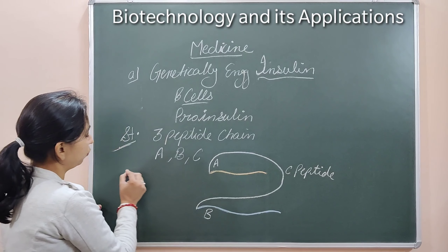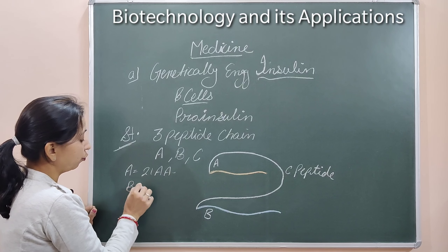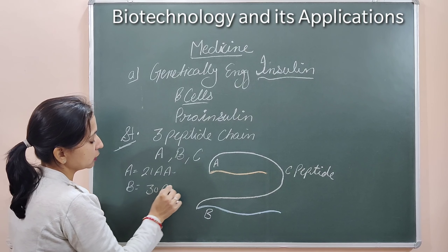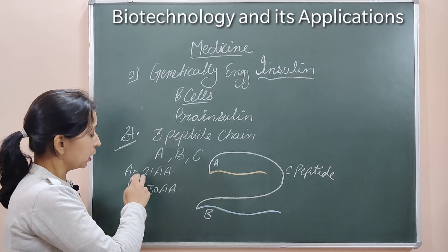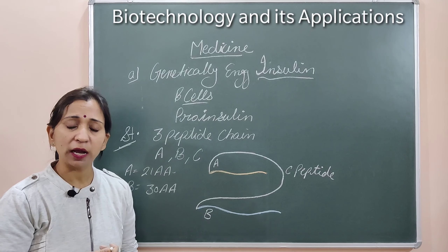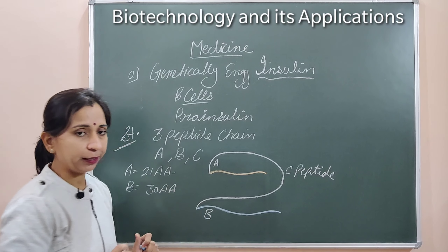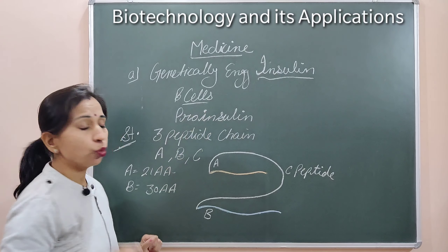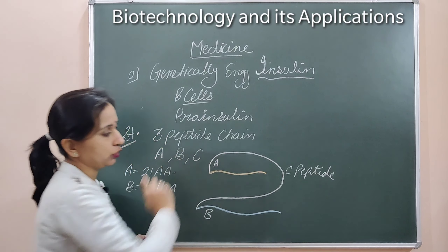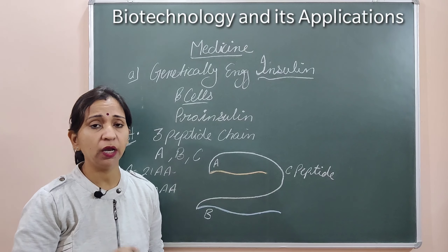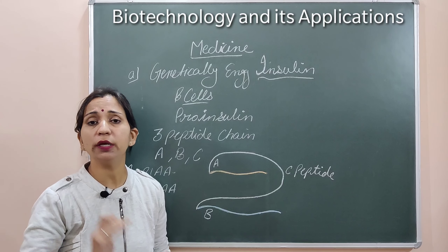The A-chain is made up of 21 amino acids. The B-chain is made up of 30 amino acids. Overall, insulin is made up of 51 amino acids — 21 amino acids make the A-chain and 30 amino acids make the B-chain. The C-chain is the interlinked chain which gets removed when pro-insulin is converted into mature insulin.